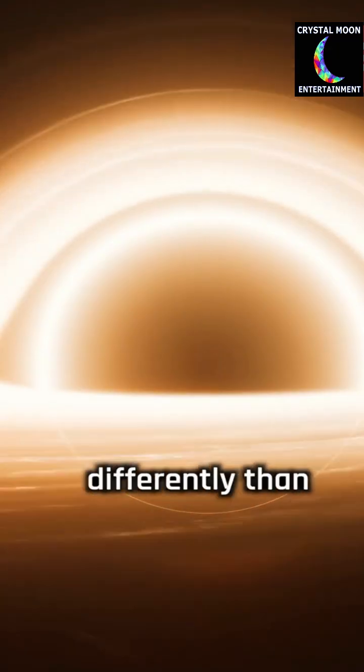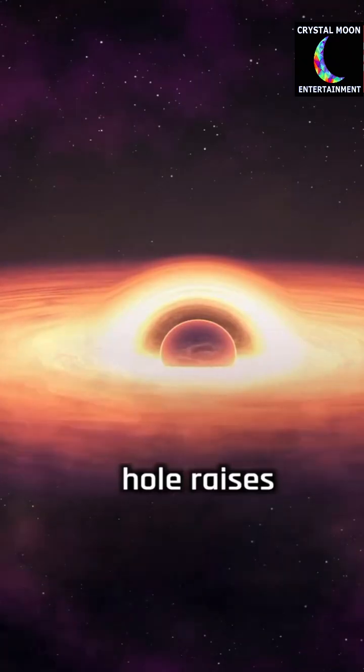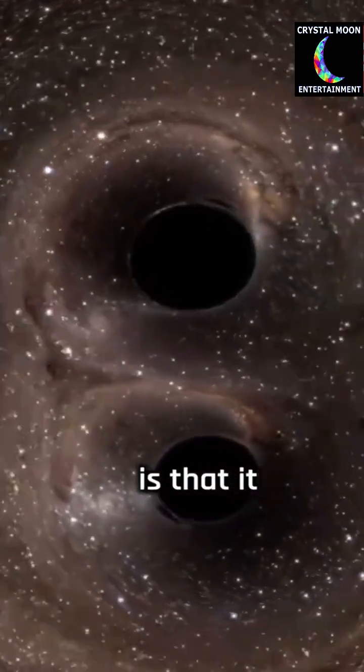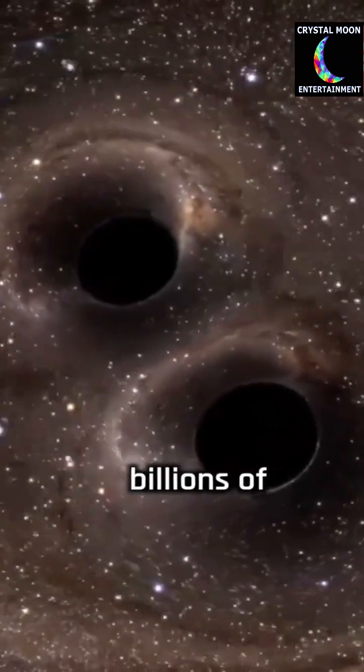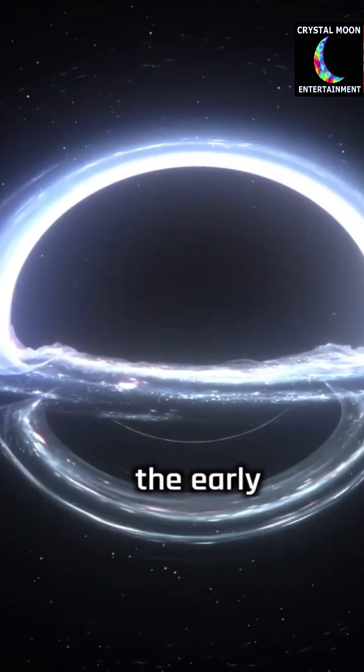This black hole is one of the largest ever found, residing in a massive galaxy called LRG 3-75. This galaxy bends and magnifies the light from a more distant galaxy, creating a phenomenon known as an Einstein ring.